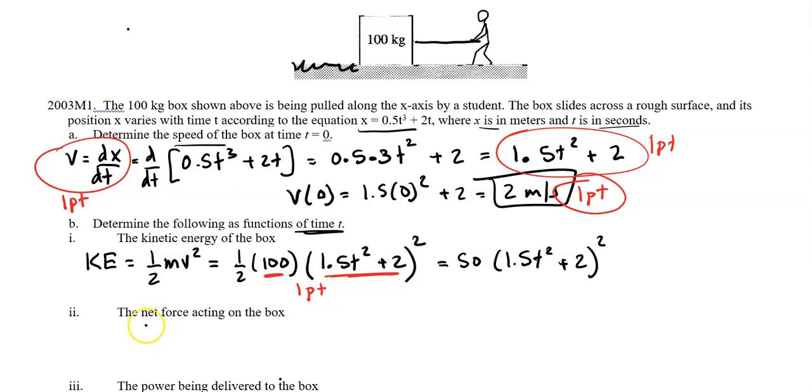Now we want to find the net force acting on the box. I know F_net is equal to ma. Mass is 100, so I can plug that in. It doesn't explicitly give us a, so let's see if we can find it. I know velocity is the derivative of position with respect to time. Acceleration is the derivative of velocity with respect to time, so that's dv/dt. Our velocity is 1.5t² + 2, so the derivative is 3t.